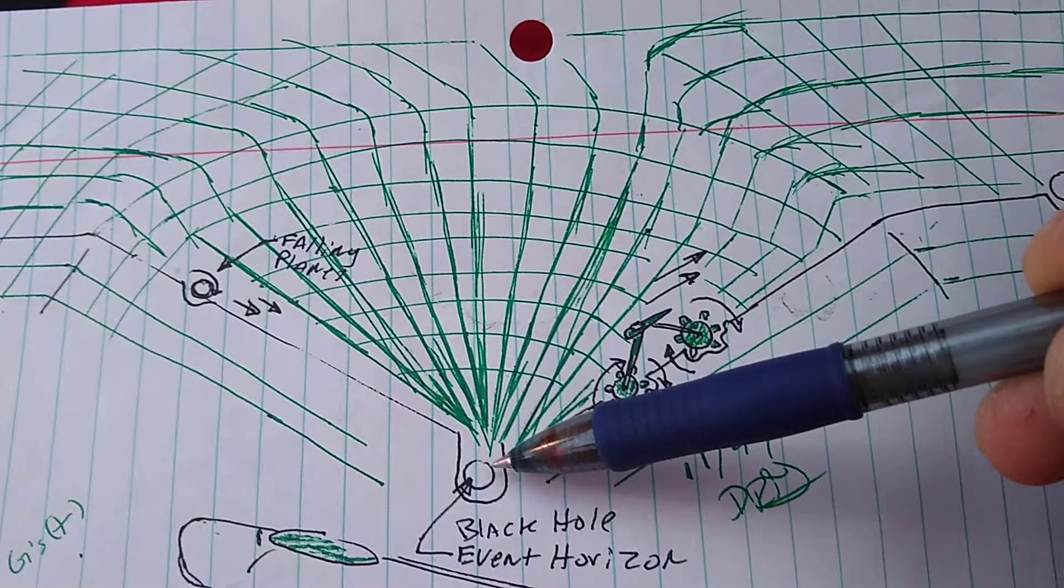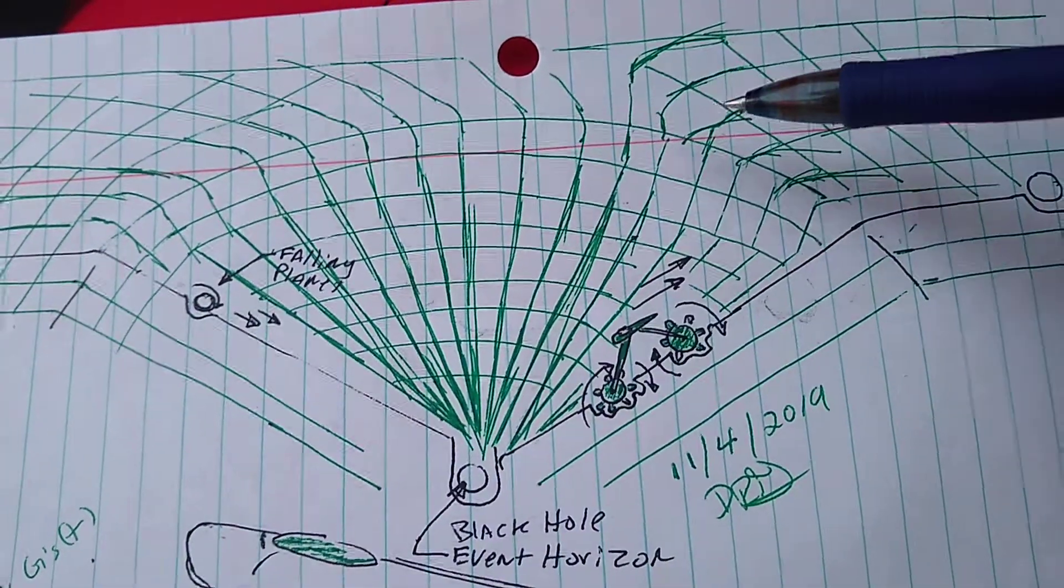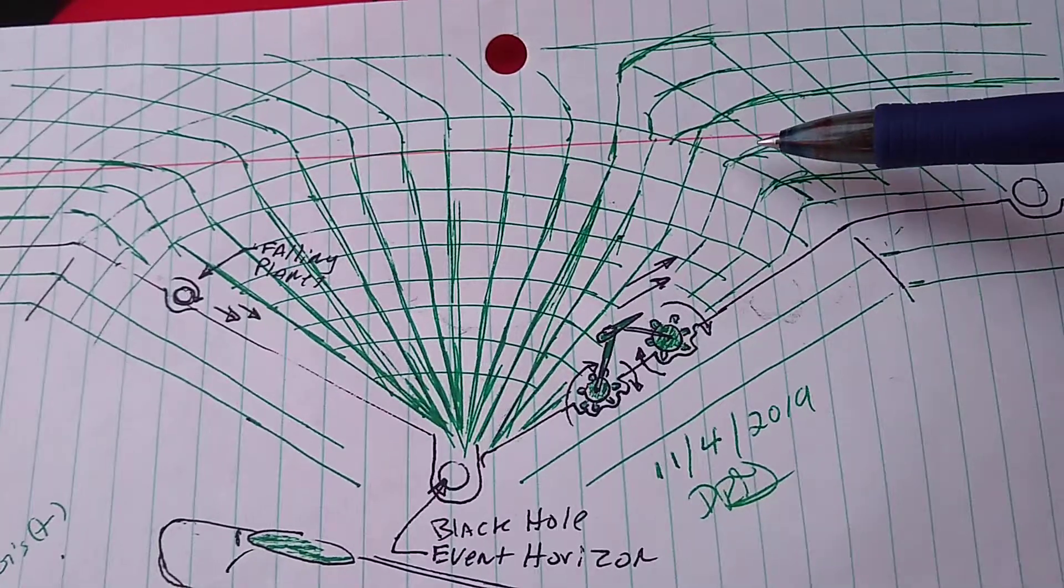We have a black hole right here and it's got curvature of time and space. It's basically a fabric, realistically a fabric.